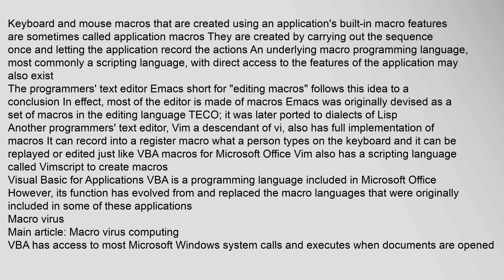Another programmer's text editor, Vim, a descendant of Vi, also has a full implementation of macros. It can record into a register what a person types on the keyboard, and it can be replayed or edited, just like VBA macros for Microsoft Office. Vim also has a scripting language called Vimscript to create macros. Visual Basic for Applications (VBA) is a programming language included in Microsoft Office; however, its function has evolved from and replaced the macro languages originally included in some of these applications.